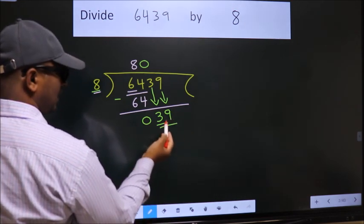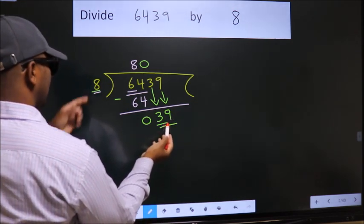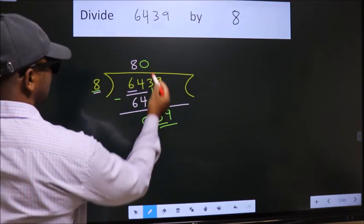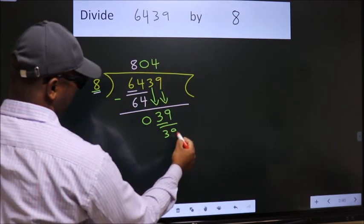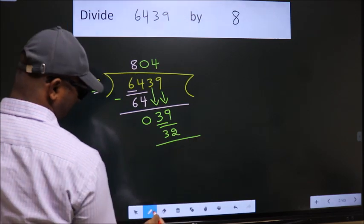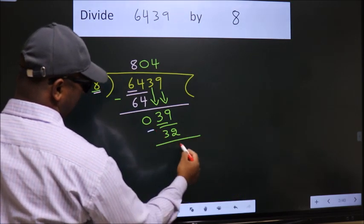So, 39. A number close to 39 in 8 table is 8 fours, 32. Now, we subtract. We get 7.